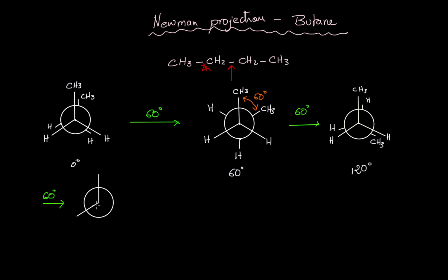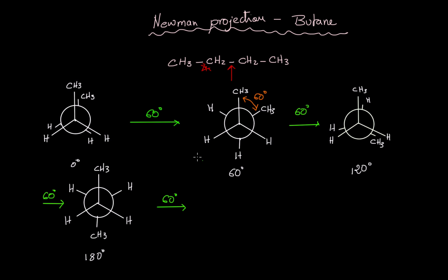At 120 degrees, this is the 120 degree eclipsed conformation. Rotating one more 60 degrees takes us back to a staggered conformation. Now I have CH3, H, H on the front, and the CH3 on the back is now at the opposite side with the two hydrogens. This is the 180 degree conformation.